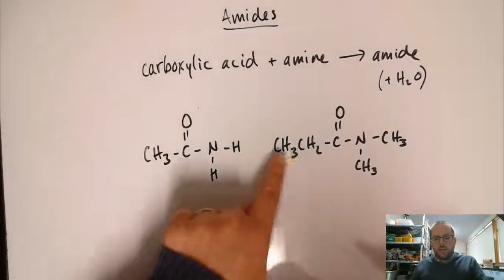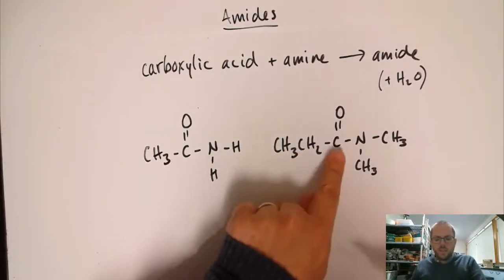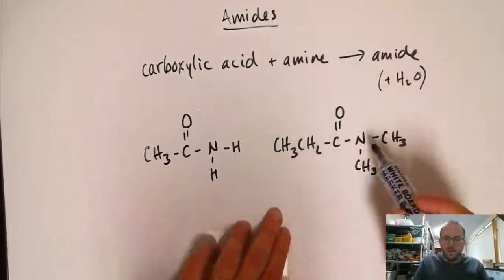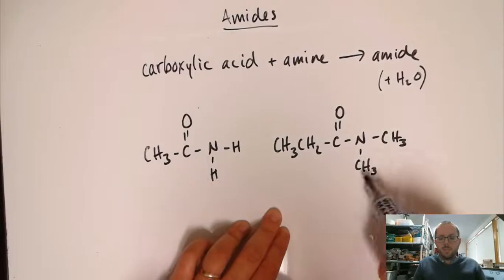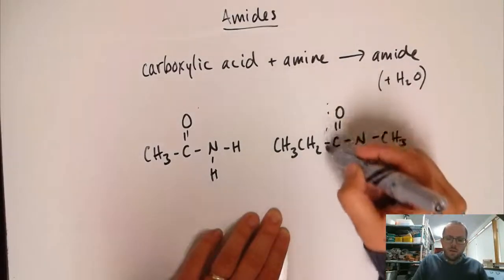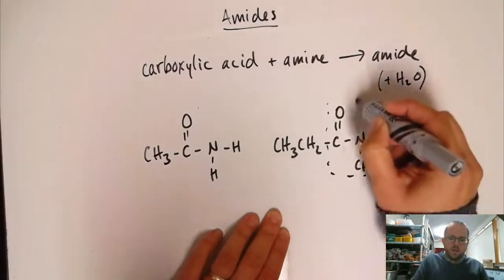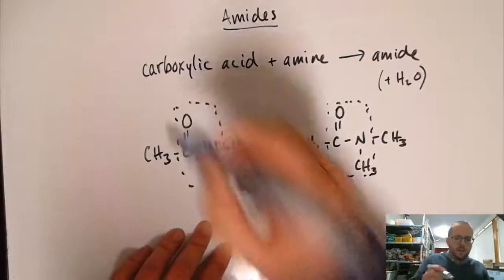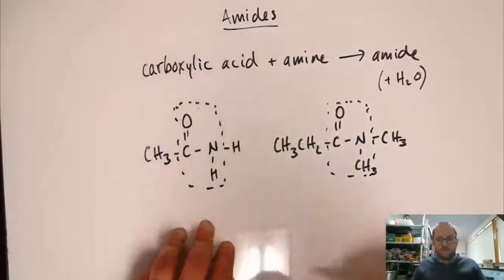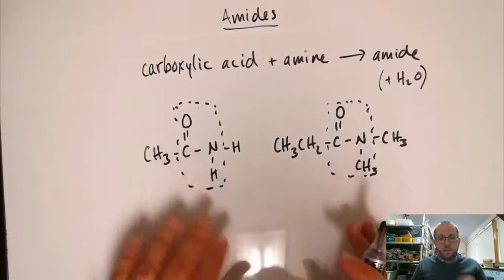Over here we've got an ethyl group, still that same carbonyl group, and then we have a nitrogen with two bonds, but in this case neither of them is a hydrogen, both of them are methyl groups. But we're still looking at the same section of the molecule being an indication this is an amide. It's the same functional group.